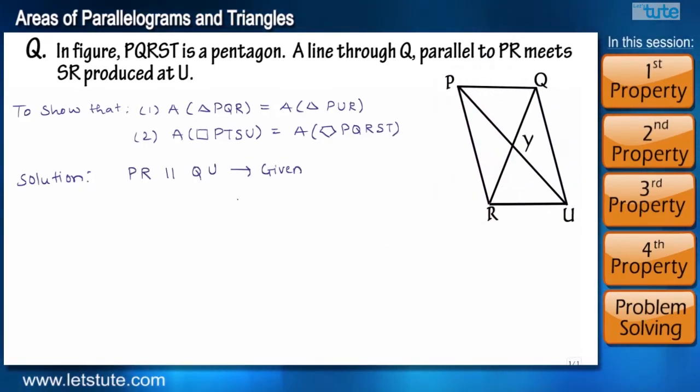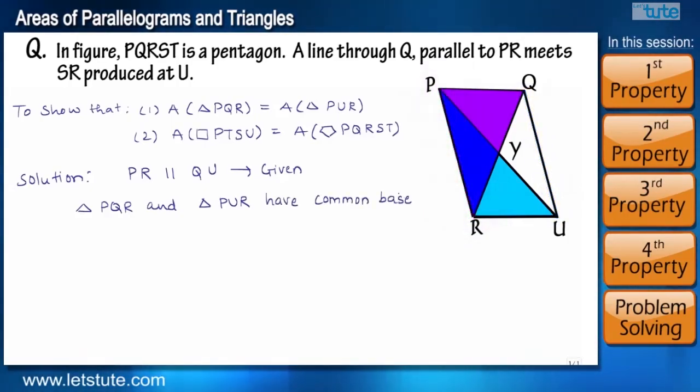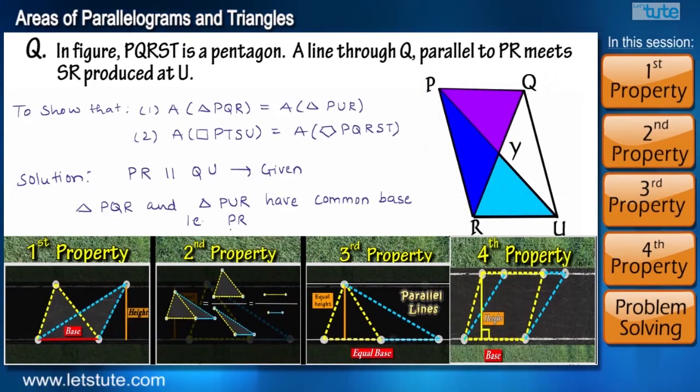If we look closely, both the triangles also lie between the same parallel lines and they have a common base that is PR. So now can you tell me using which property we can say that the triangles have equal areas?